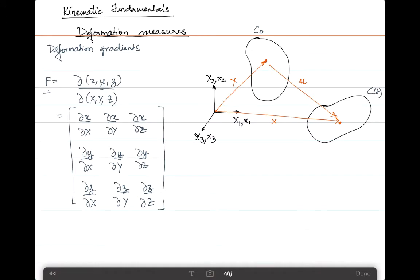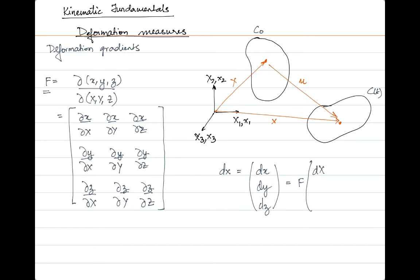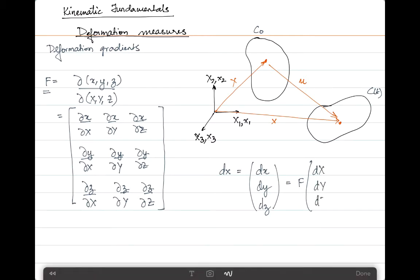We can also write this in another way. We can say that dx, written as the components dx, dy, and dz, is equal to the deformation gradient with respect to the reference location dX. Therefore, dx = F · dX. That is how the deformation gradient is described.